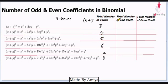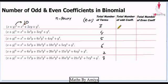Now the important concept is to find the total number of odd coefficients. To find total number of odd coefficients, we just need to convert the power into base 2. The base 2 of 2 is 10. First convert power in base 2, then count the number of 1's in the base 2 representation. There is only one 1 in the base 2 notation of number 2. So total number of odd coefficients is 2 raised to power 1, where 1 is the number of 1's in the base 2 notation.